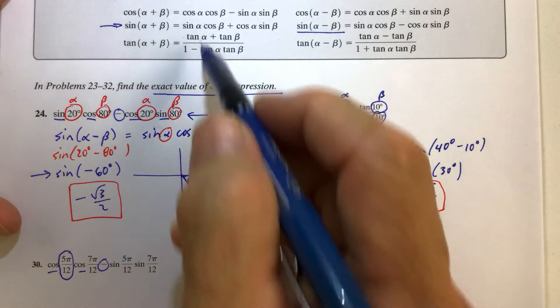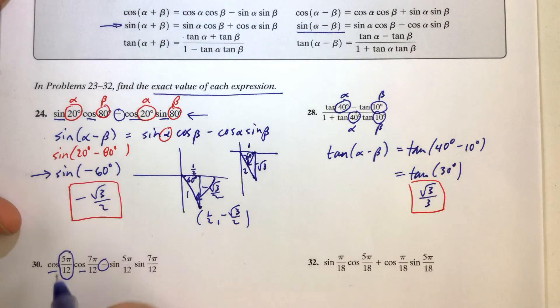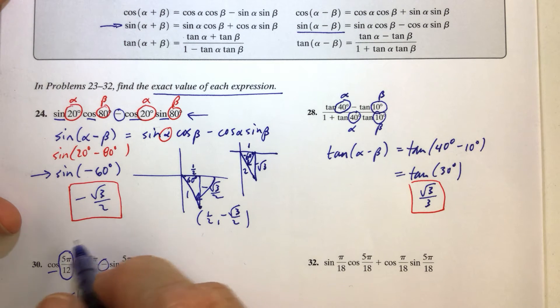when we have a minus in between, that corresponds to the cosine of alpha plus beta, and so therefore all we have to do is figure out the alpha and the beta.